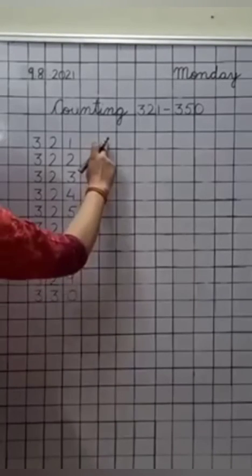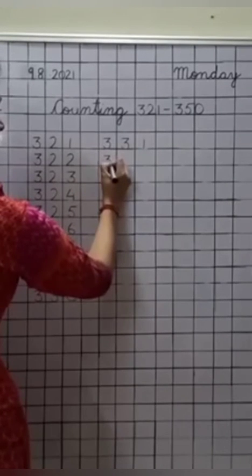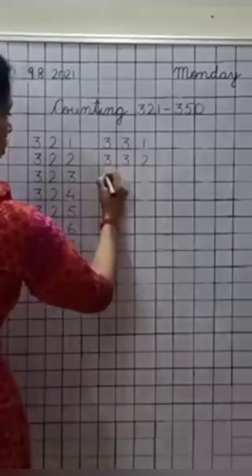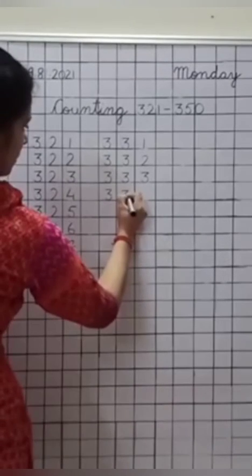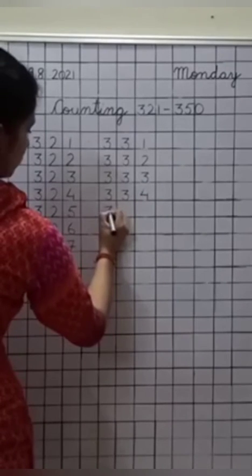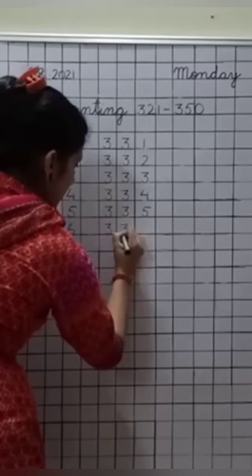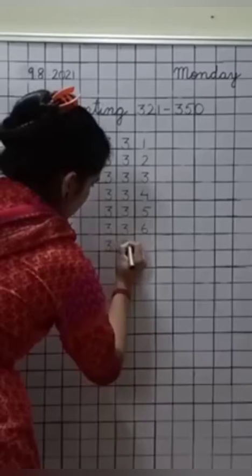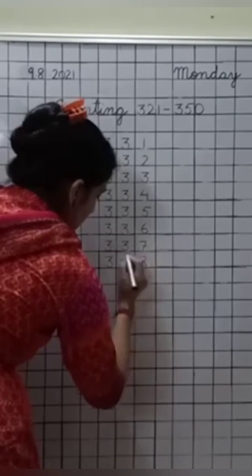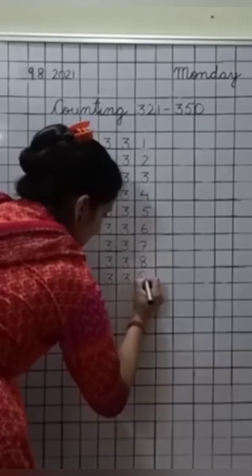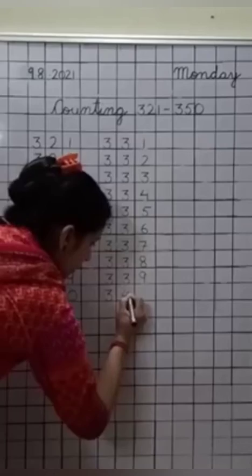After three hundred thirty, now we will write down here: three hundred thirty-one, three hundred thirty-two, three hundred thirty-three, three hundred thirty-four, three hundred thirty-five, three hundred thirty-six, three hundred thirty-seven, three hundred thirty-eight, three hundred thirty-nine. What comes after thirty-nine? Forty. Very good. So write down here: three hundred forty.